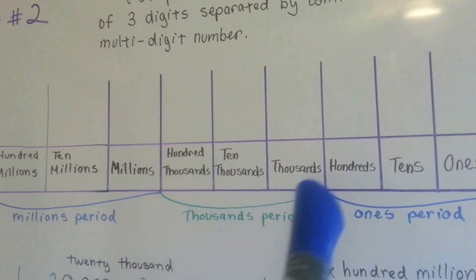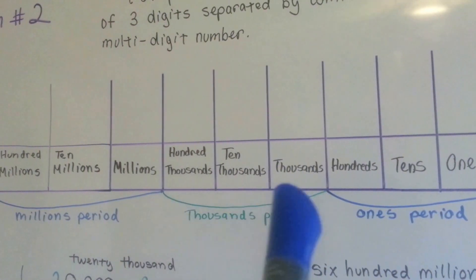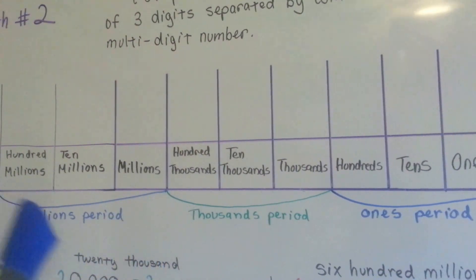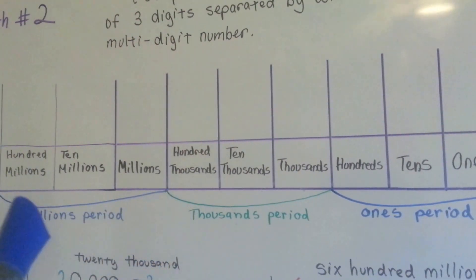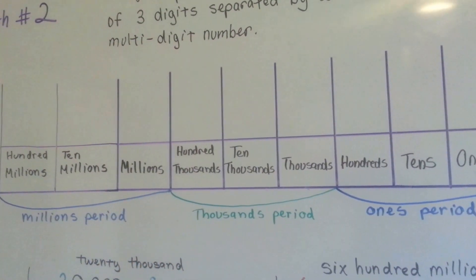This would be the thousands period: thousands, ten thousands, hundred thousands. And this would be the millions period: millions, ten millions, and hundred millions.